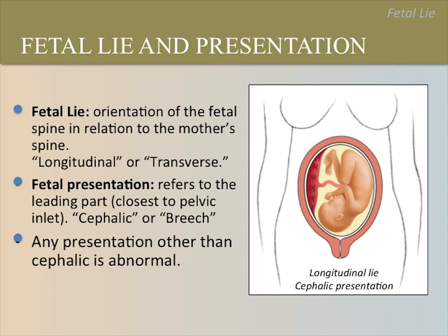There are a few terms we should introduce now to describe the orientation of the fetus in the uterus. The first term is lie, which refers to the orientation of the fetal spine in relation to the mother's spine. The lie can either be longitudinal or transverse. The next term is fetal presentation, which refers to the leading fetal part that is closest to the pelvic inlet. The fetal presentation can either be cephalic — head down — or breech — head up.